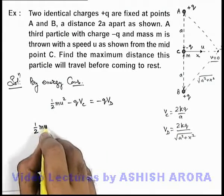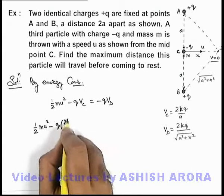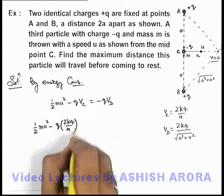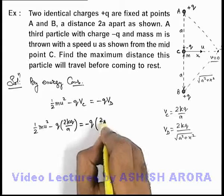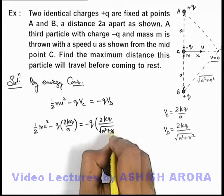the expression will be ½mu² - q(2kq/a) = -q(2kq/√(a²+x²)).